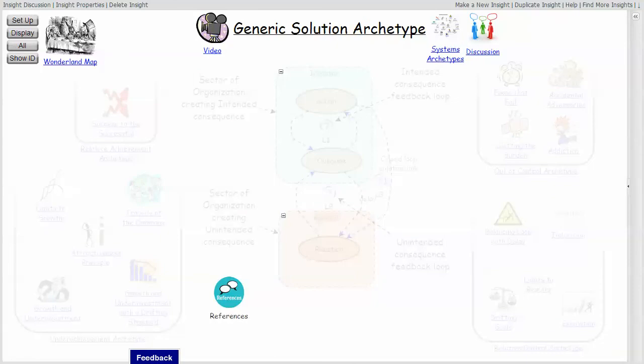If you start out with an action and it produces an outcome, and that outcome has an influence on the action that initiated it, this particular structure is drawn with a question mark because depending upon whether this is a balancing or reinforcing loop, it could be either. But it is an intended consequence loop.